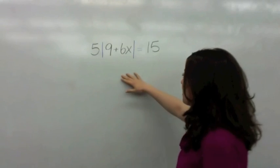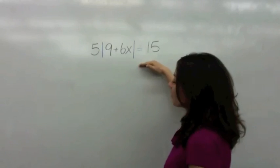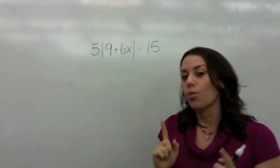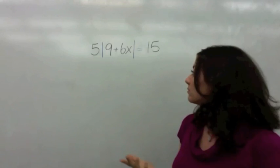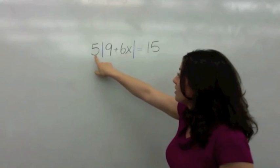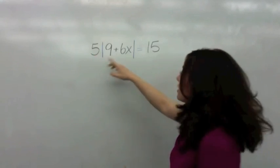So in this example you have an absolute value equation. These are the absolute value symbols but what do you notice that's different? Okay, there's a number that is touching the absolute value.